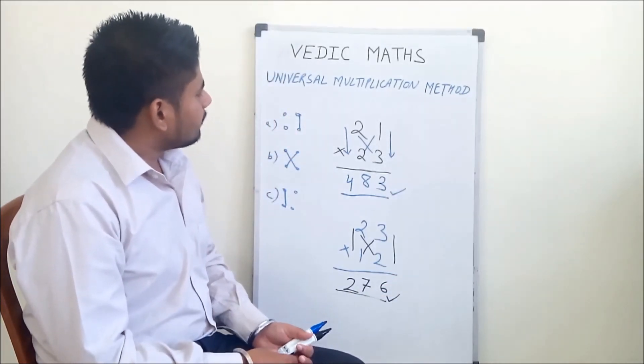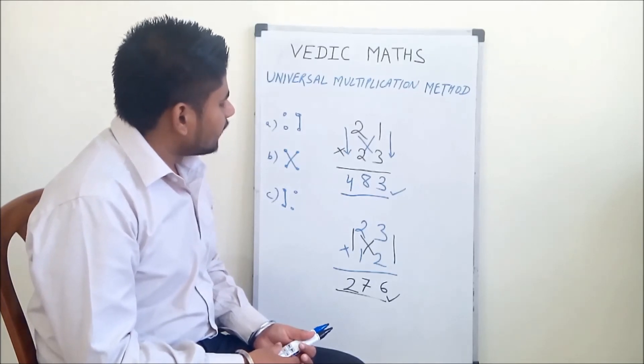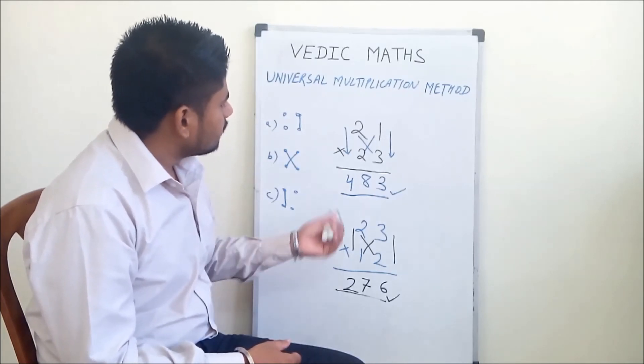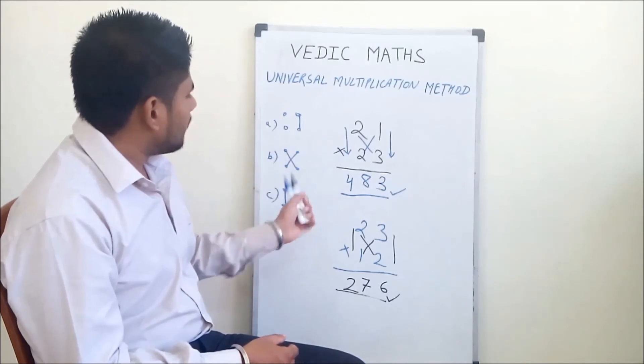So with the help of the universal multiplication method, we can multiply any number by using this simple pattern.